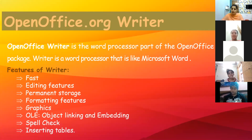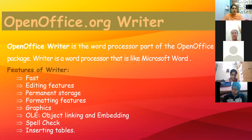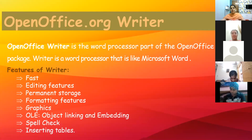What are the features of Writer? It is fast — you can easily type the text and give formatting. Editing features are available. Permanent storage: once you have created a document, you can easily store and save it. Graphics can be included — you can draw figures, insert smart arts, clip arts, and pictures. Object linking and embedding: you can link any other document with OpenOffice Writer by inserting hyperlinks. Spell check and grammar facilities are also available. Inserting pictures and tables: tables can also be inserted in the Writer document, the same way as in MS Word.